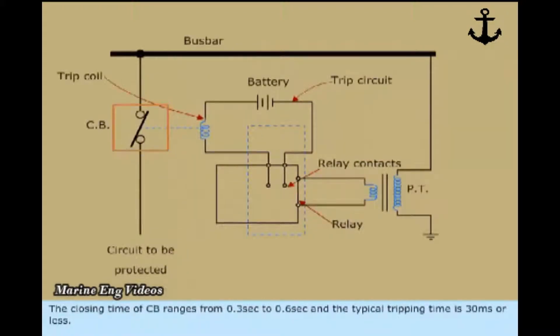The closing time of CB ranges from 0.3 seconds to 0.6 seconds and the typical tripping time is 30 milliseconds or less.